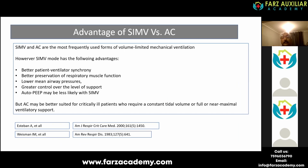Coming to the advantages of SIMV and assist control — these are commonly used modes. SIMV has advantages like better patient-ventilator synchrony, better preservation of respiratory muscle function, lower mean airway pressure, lower auto-PEEP, and greater control of the level of support. But if you have a very sick or critically ill patient on straight SIMV mode, you are not guaranteeing full or near-maximal ventilatory support, which assist control provides. So if a patient is very sick, go for control mode first, then once stabilized switch to SIMV.